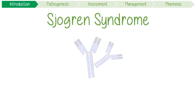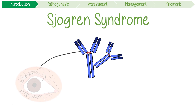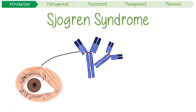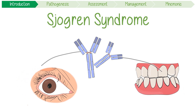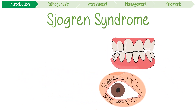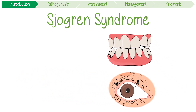Sjogren's syndrome is an autoimmune disease that targets the lacrimal or crying glands and salivary ducts in our mouth. This causes a constellation of symptoms that I remember with the GEM acronym.